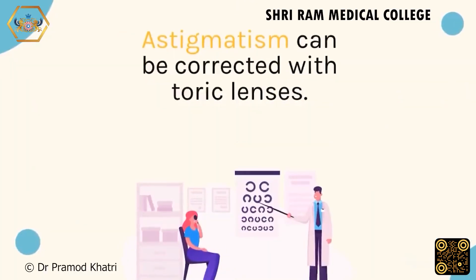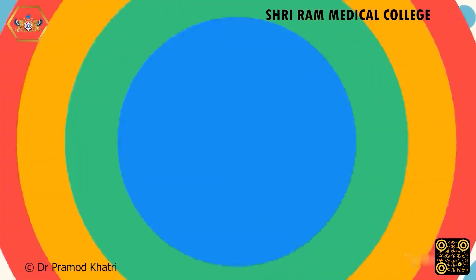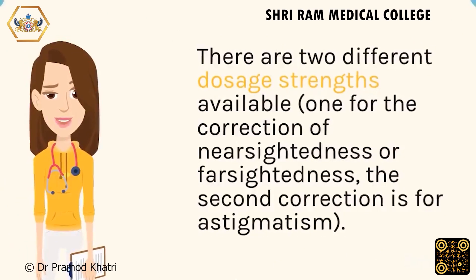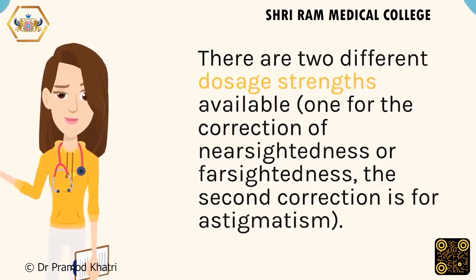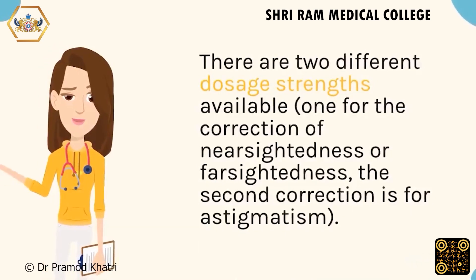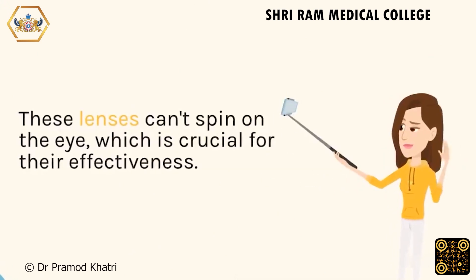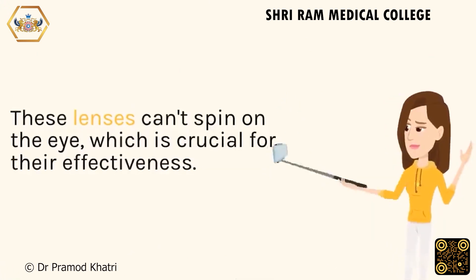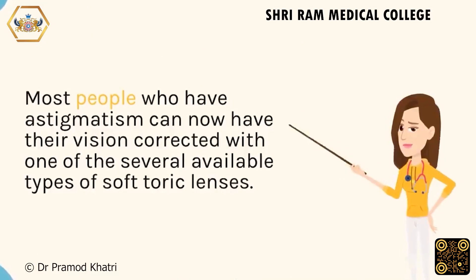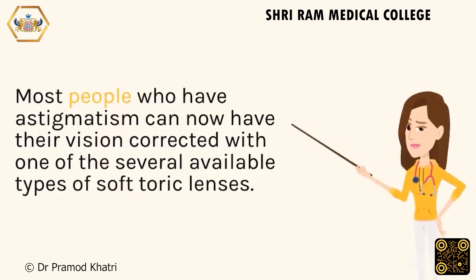Astigmatism can be corrected with toric lenses. There are two different power strengths available: one for the correction of nearsightedness or farsightedness, and the second for astigmatism. These lenses can't spin on the eye, which is crucial for their effectiveness. Most people who have astigmatism can now have their vision corrected with one of the several available types of soft toric lenses.